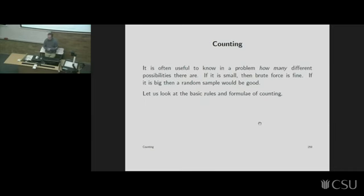In a real image there are probably just too many different lines, so a brute force method won't work. What you do instead is randomly pick a bunch of lines and get collections from that — a randomized Hough transform or something like that. Knowing how many things there are affects what sort of algorithm you want to apply.